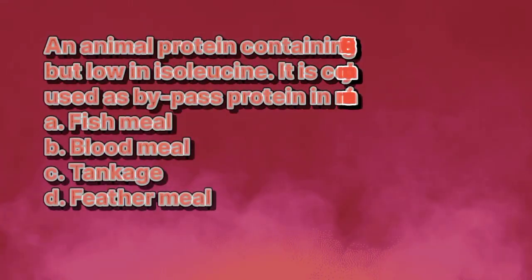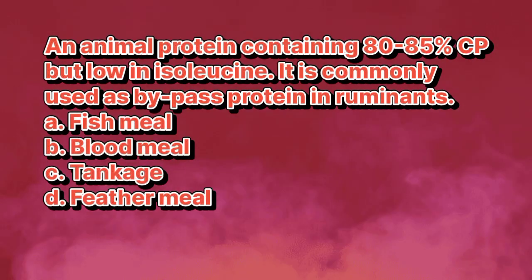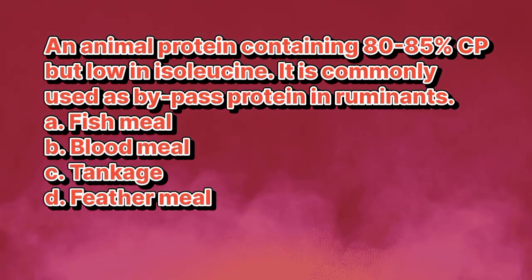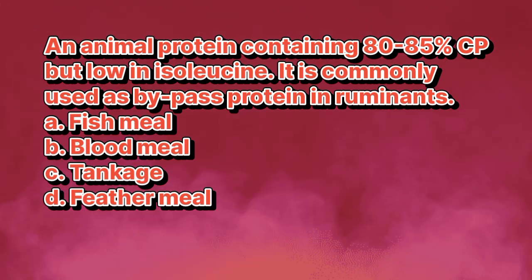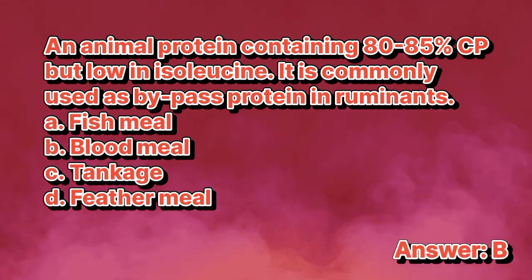An animal protein containing 80 to 85% crude protein but low in isoleucine. It is commonly used as bypass protein in ruminants. A. Fish meal. B. Blood meal. C. Tankage. D. Feather meal. The answer is letter B.